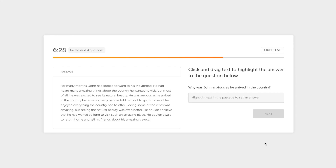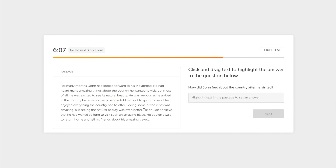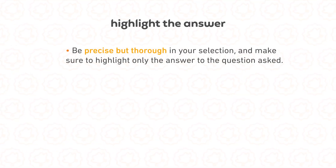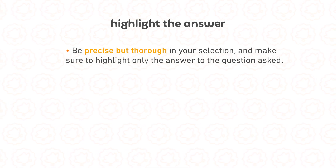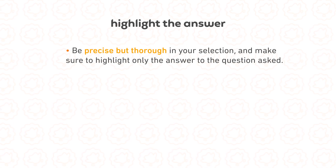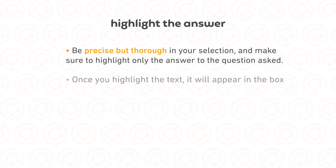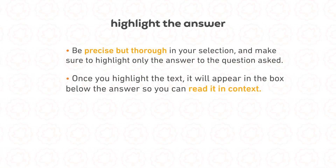The third question type we're going to talk about is highlight the answer. Highlight the answer asks you to click and drag the text to highlight the answer to the question below. So you'll see a question on screen, then find and highlight the answer within the passage. Be precise but thorough in your selection, and make sure to highlight only the answer to the question asked. You don't want to highlight too much or too little. Also, the length of the correct response will vary depending on the question. And once you highlight the text, it will appear in the box below the answer so you can read it in context.